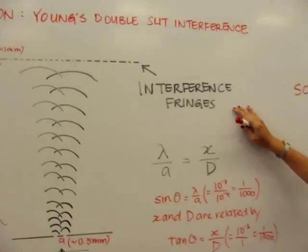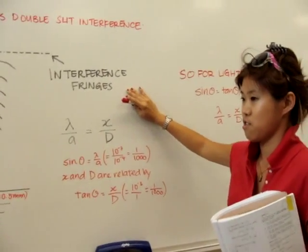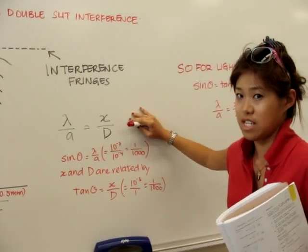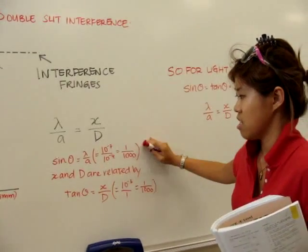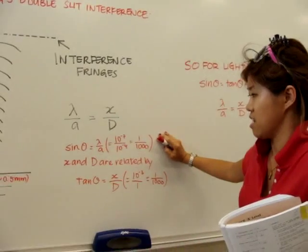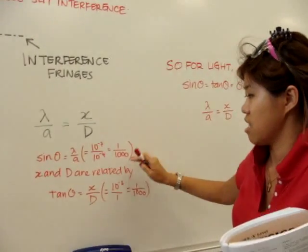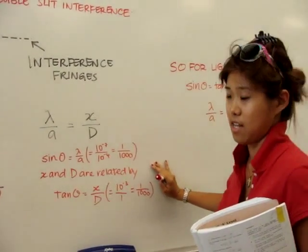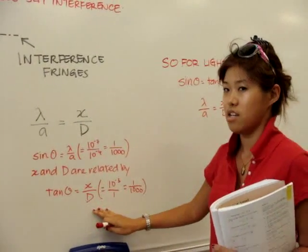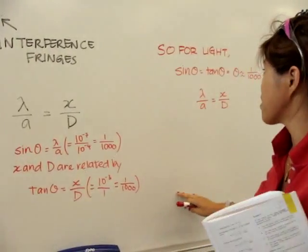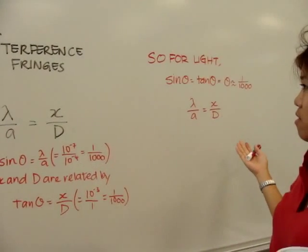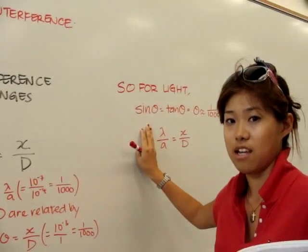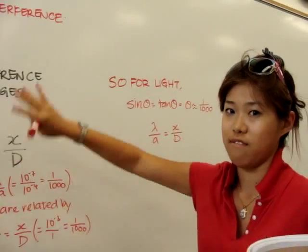And these are called interference fringes. And the specific formula that explains this is lambda over A equals to x over D, big D. And sine theta is equals to lambda over A or equals to 1 over 1,000. And since x and big D are related by tangent theta, this also equals to x over big D. And therefore, this is how we arrived at this formula. And these angles are actually indicative of how the light source travels towards the screen.